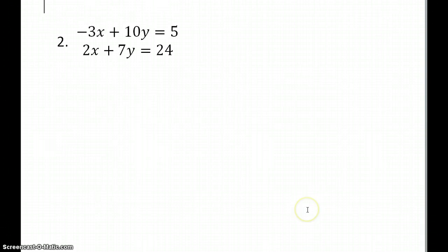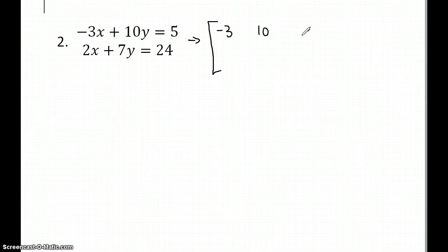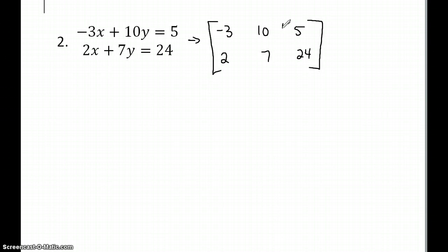Here's the problem. If you want to try it first, go ahead and pause it and then replay the video. Again, change this to the augmented matrix: negative three, ten, five, two, seven, twenty-four. I think what I'm going to do is add these two rows, because that will give me a negative one here, and then all I have to do is divide by a negative.